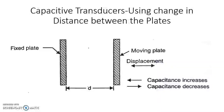Now let us see capacitive transducers using change in the distance between the plates. In this type, the capacitance is changed by changing the distance between the plates, so displacement is measured in terms of change in distance and hence change in capacitance. One plate is fixed and another is movable. Since C equals epsilon A divided by d, capacitance is inversely proportional to distance, so as the movable plate moves toward the fixed plate, the distance reduces and capacitance increases.